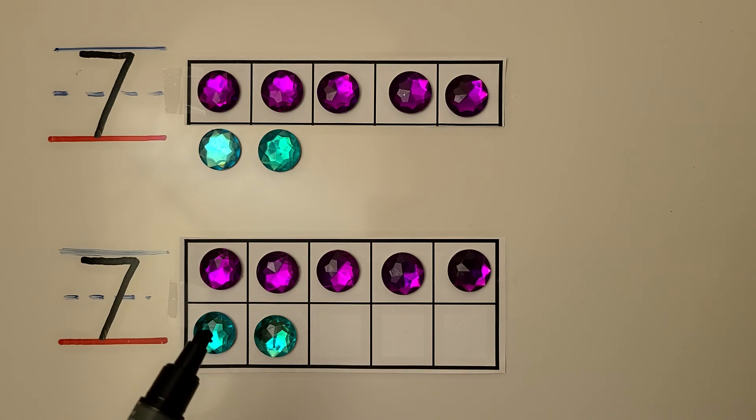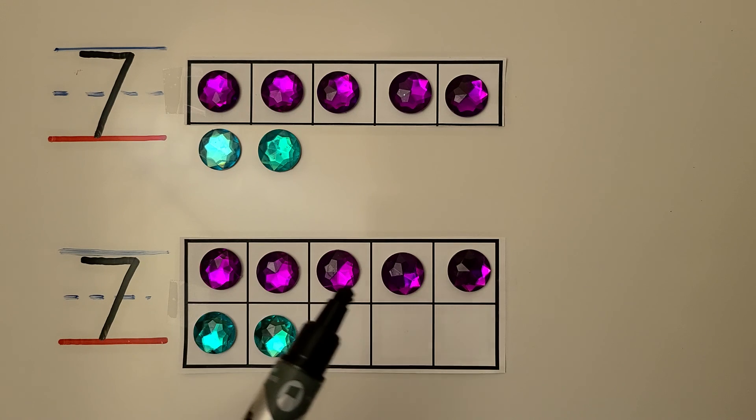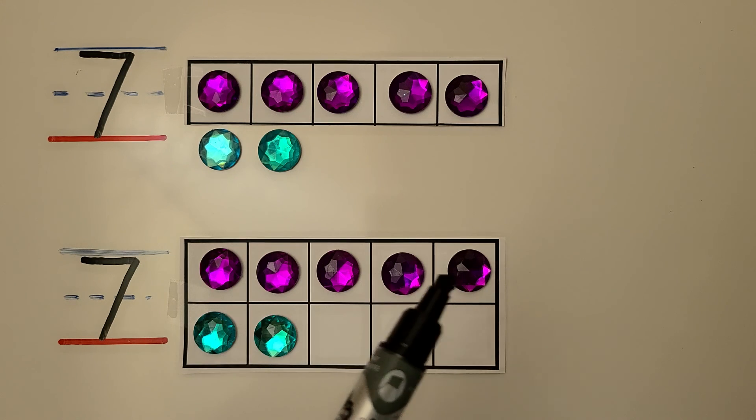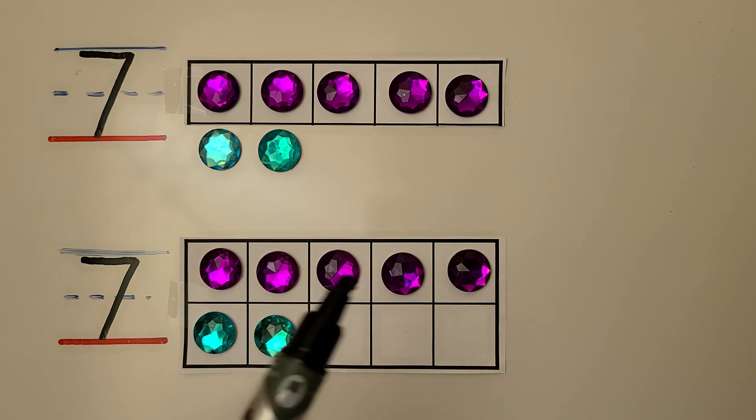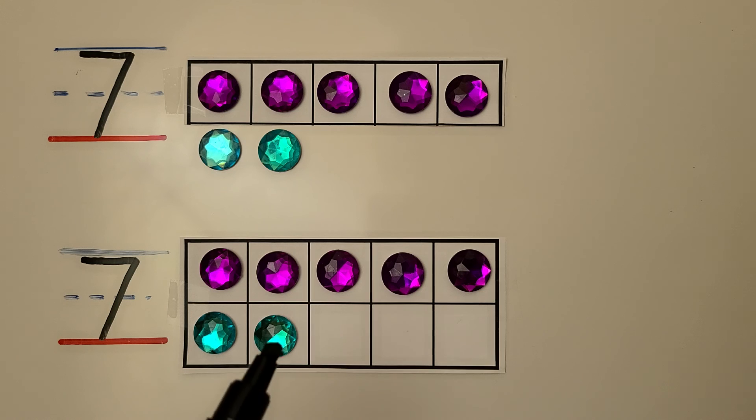Here we have a 10 frame with 7 counters. The top row is full with 5 counters and the bottom row has 2 counters. We have 5, 6, 7.